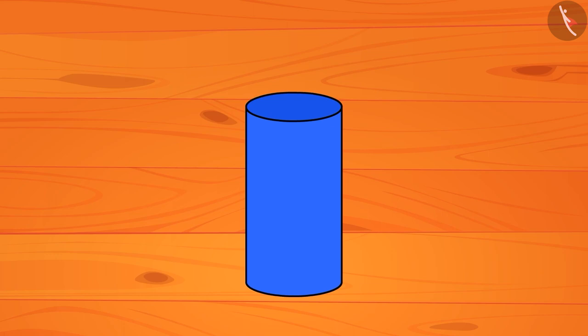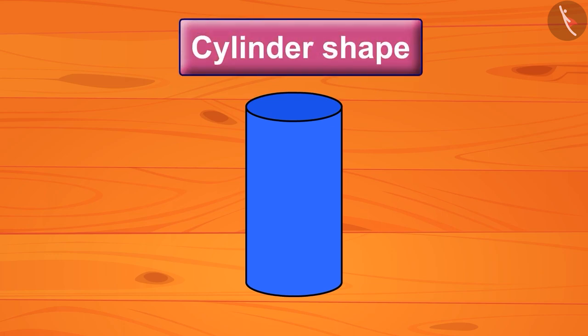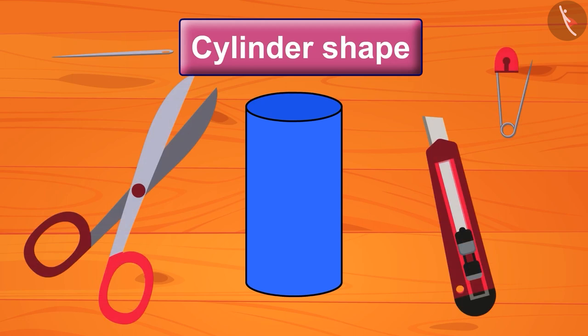Children, now it's your turn to make a cylinder shape with paper. But keep in mind that while using scissors and any sharp object, take the help of an elder. Make a cylinder shape with a piece of paper and show it to your friends and family.